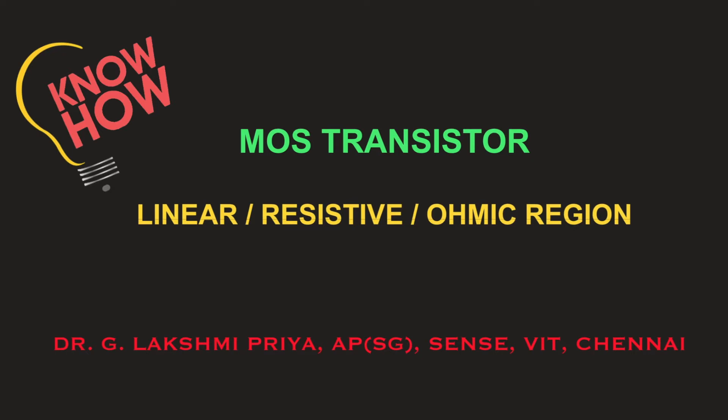Welcome to the next session on the Know-How series. This video is again about a MOSFET transistor in a linear region. We have seen two different videos on how an NMOS transistor operates in a linear region and the linear relationship between drain current and drain-to-source voltage. In this video, we will understand how a MOSFET operating in a linear region can be utilized as a variable voltage-controlled resistor, and why this linear region is also known as the resistive or ohmic region.